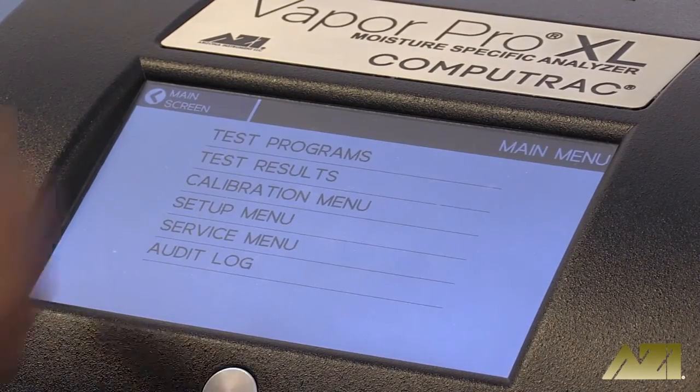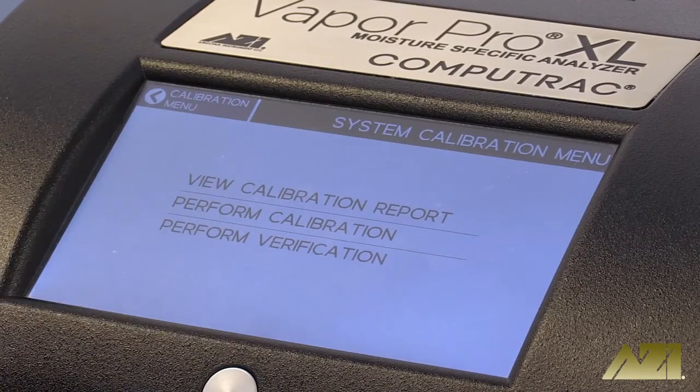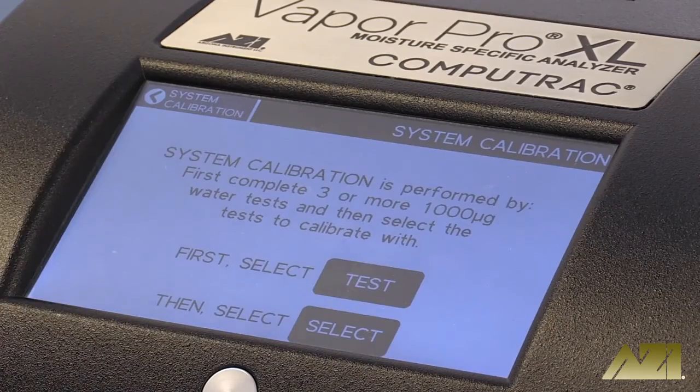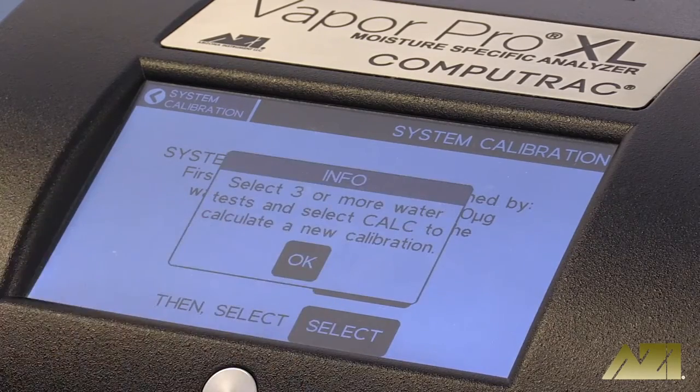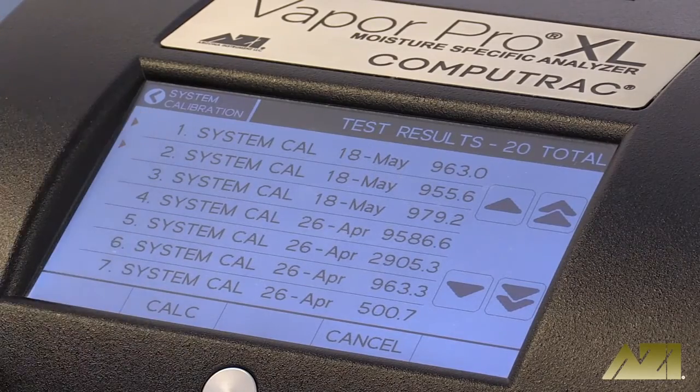If your results do not fall within those requirements, you will need to perform a system calibration. Simply select the test results you wish to use to perform the calibration and hit calibrate. We recommend that you perform statistical analysis using at least three test results.